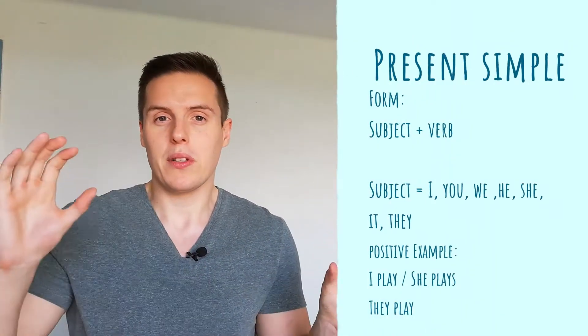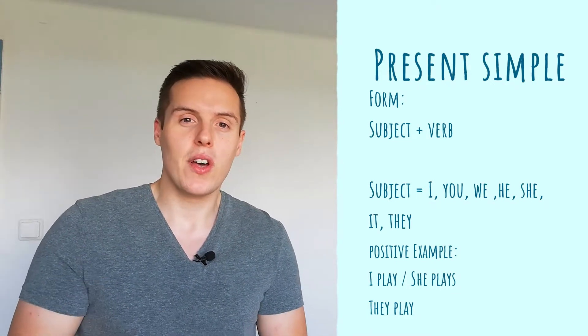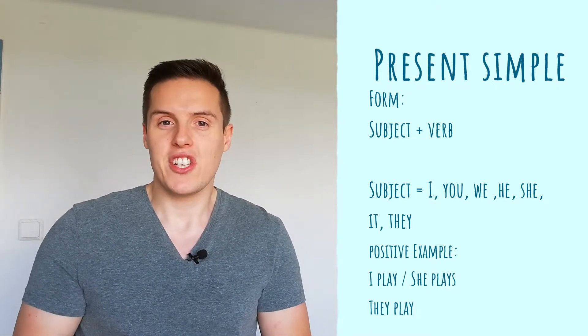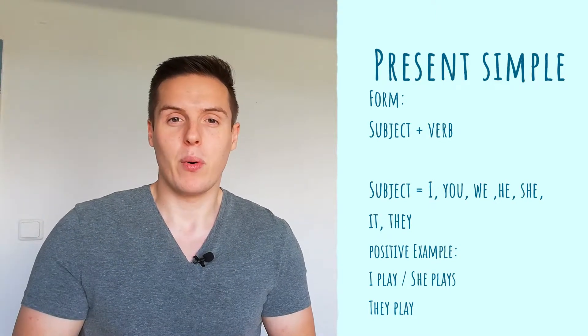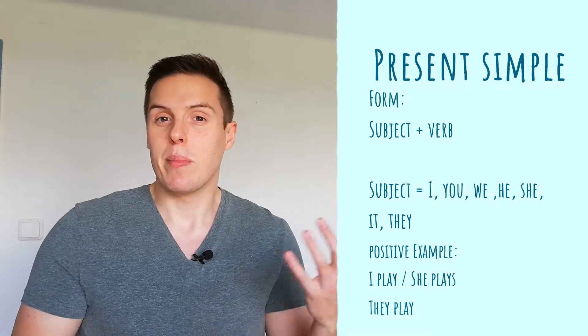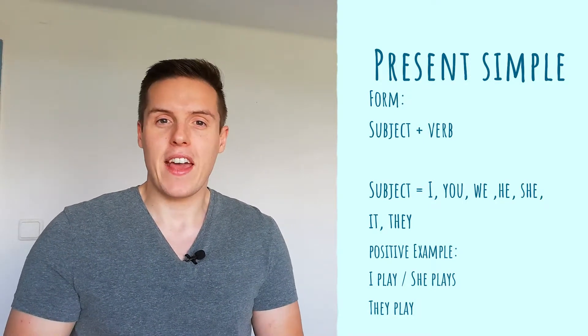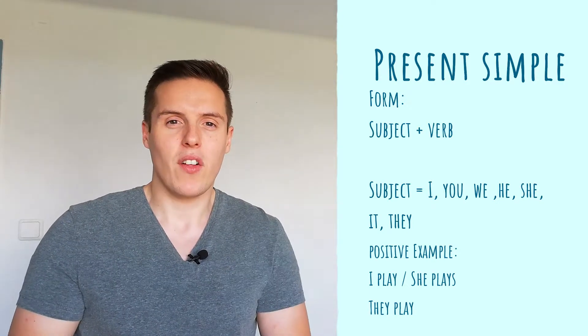Now that we know when to use the present simple, we need to know how. We create it by having the subject plus the verb. The subject being I, you, we, she, they, it — and a verb. For example, the positive form: I play, she plays, they play. So it all depends on the subject.